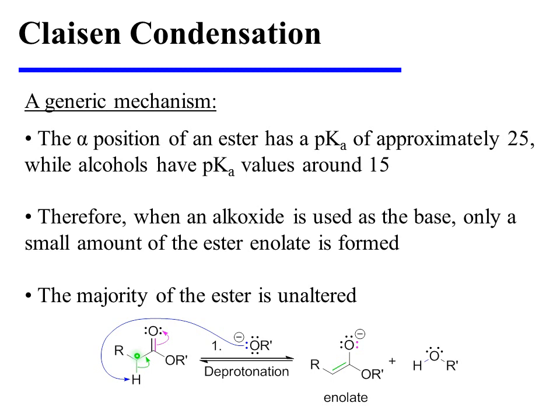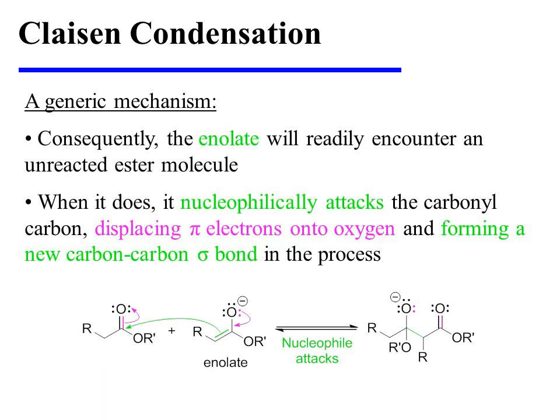The alpha position of an ester has a pKa of approximately 25, while alcohols have a pKa value around 15. Therefore, when an alkoxide is used as the base, only a small amount of the ester enolate is formed — the majority of the ester is unaltered. Consequently, once it is formed, the ester enolate will readily encounter an unreacted ester molecule.